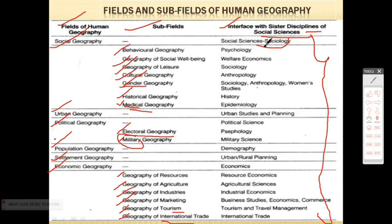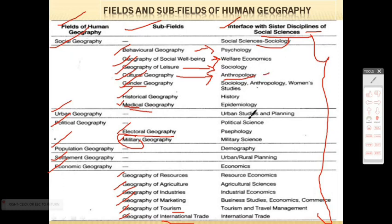The sub-field of Social Geography — Behavioral Geography — is interrelated with psychology. Geography of Social Welfare is related to welfare economics. Geography of Leisure is related to sociology. Cultural Geography is related to anthropology, which is the study of humans including different cultures, races, religions, and languages. Gender Geography has a relationship with sociology, anthropology, and women's studies. Historical Geography is related to history, and Medical Geography is related to epidemiology.